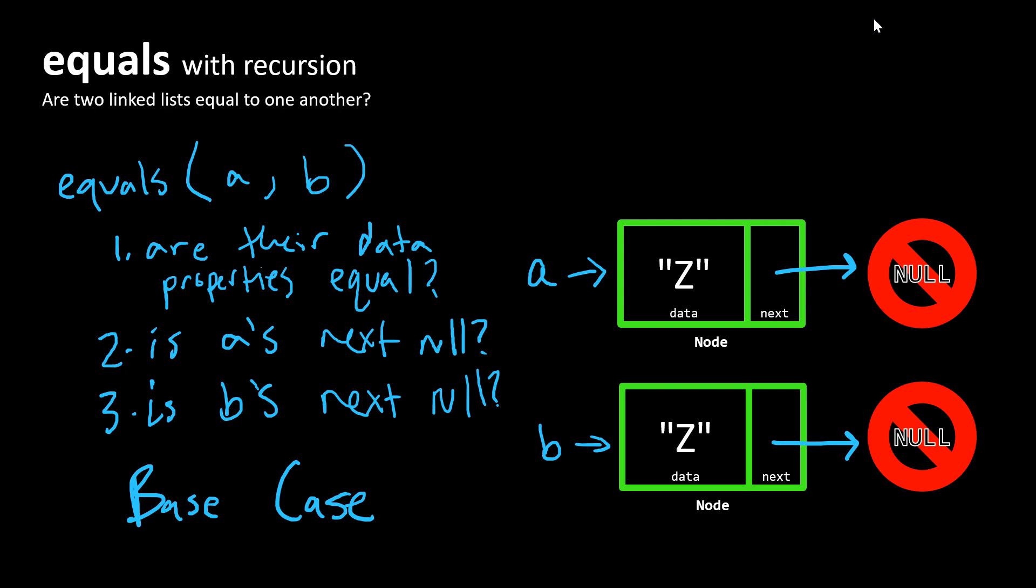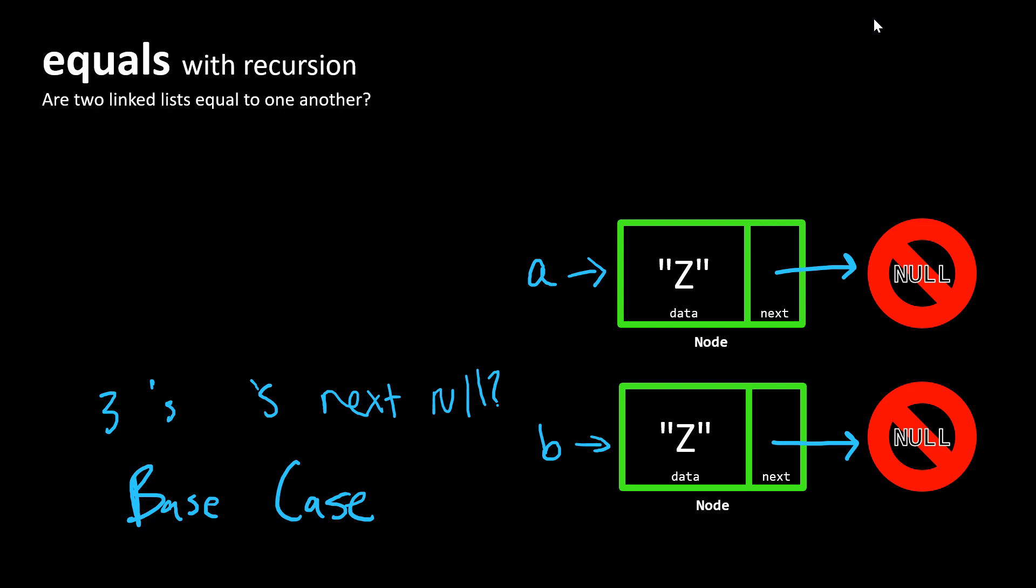Well, how do we think about our recursive case? Let me get rid of some of these checks here. So our recursive case is going to happen when we haven't yet reached the end of both lists. When we still have more work to do, we're going to test to see, intuitively,